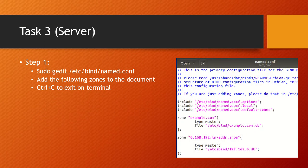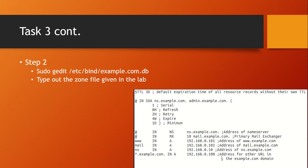For Task 3, you'll be creating zones. Follow the first step to open the configuration file, then add two zones: example.com and 0.168.192.in-addr.arpa, including everything inside the brackets. Save and exit with Ctrl+C. Then run the next terminal command, which will prompt you to create the zone file for example.com. This file will contain the DNS records for the zone.